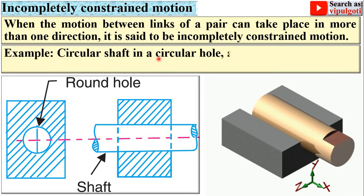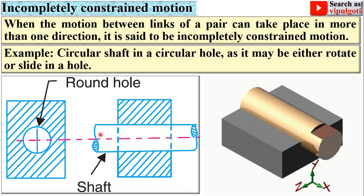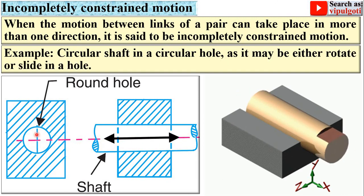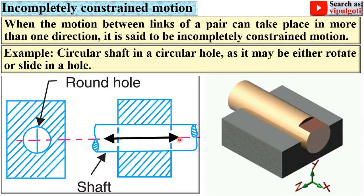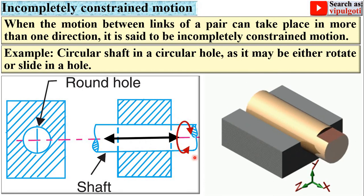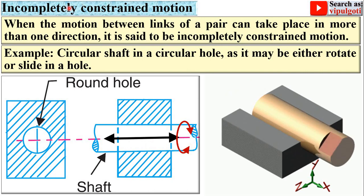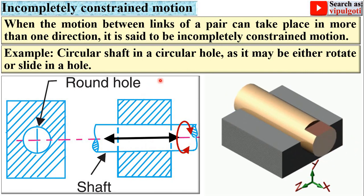Example: a circular shaft in a circular hole. Here you can see the circular shaft inside the circular hole. The shaft has translatory motion as well as rotational motion, meaning two degrees of freedom. That's why it is called incompletely constrained motion.